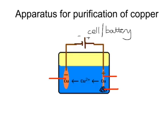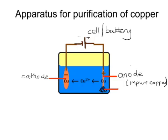The positive electrode is called the anode. The anode here is made out of impure copper. The negative electrode is called the cathode, and this is made out of a piece of pure copper.